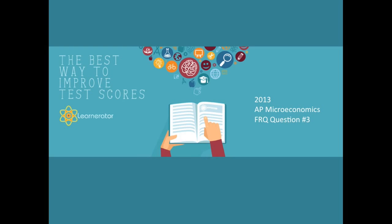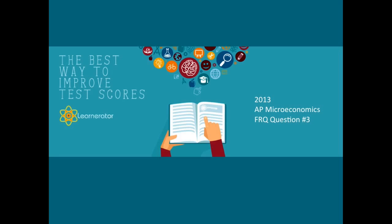Hey, it's Will from LearnRator, and in this video I'm going to walk you through the last question of the 2013 AP Microeconomics FRQ section. In this question, we're going to be asked about externalities, both positive and negative. So let's go ahead and get started.